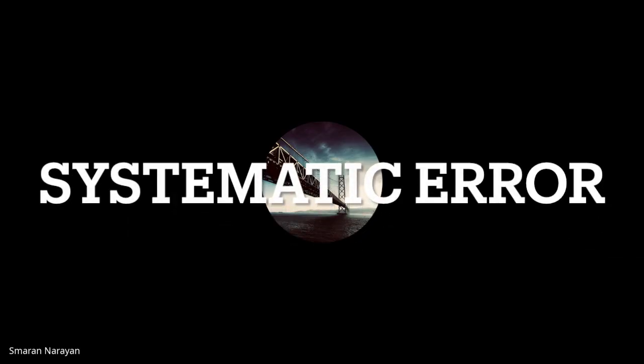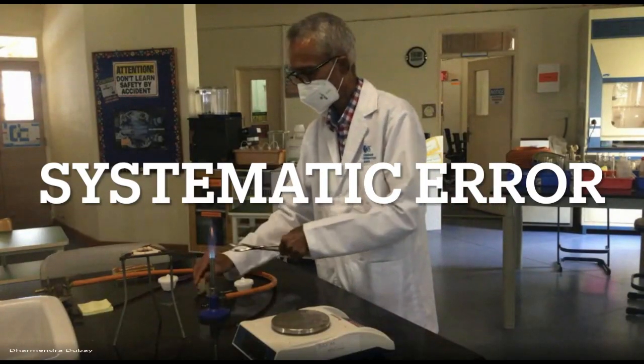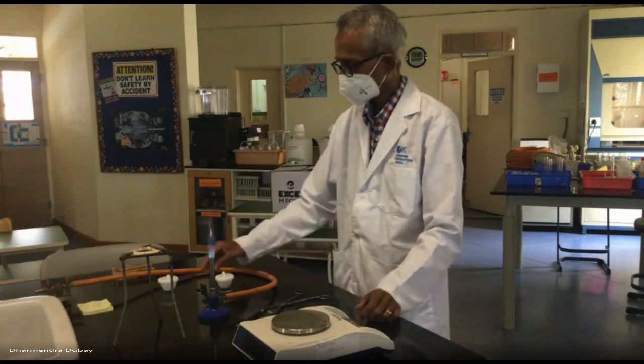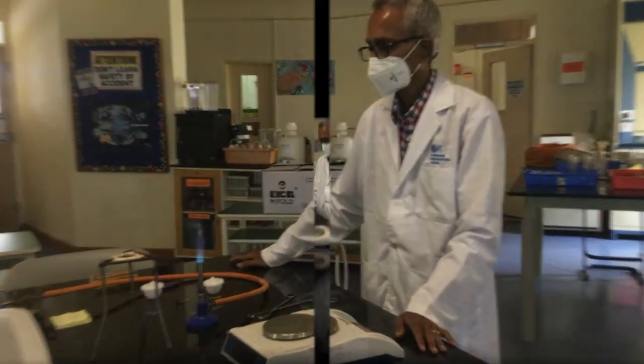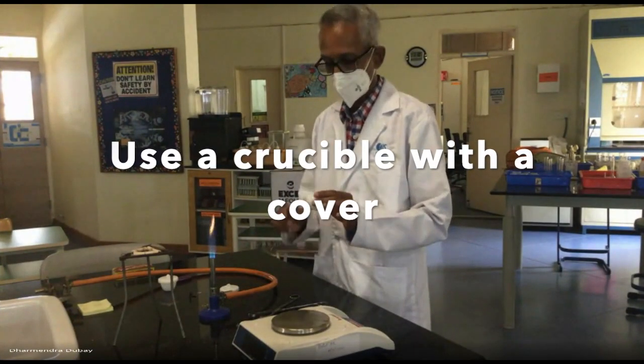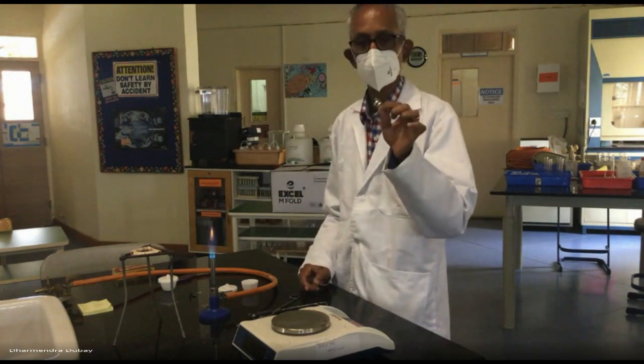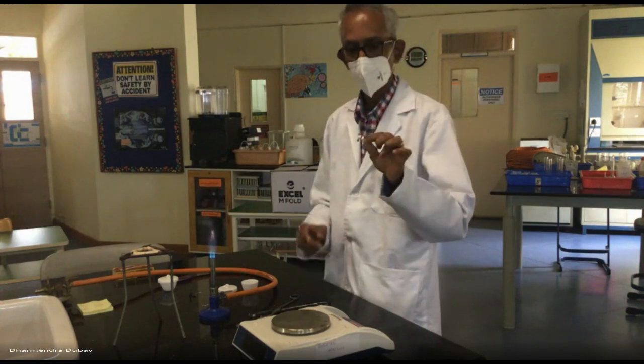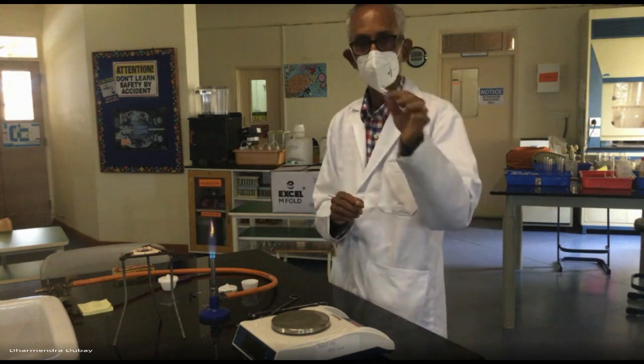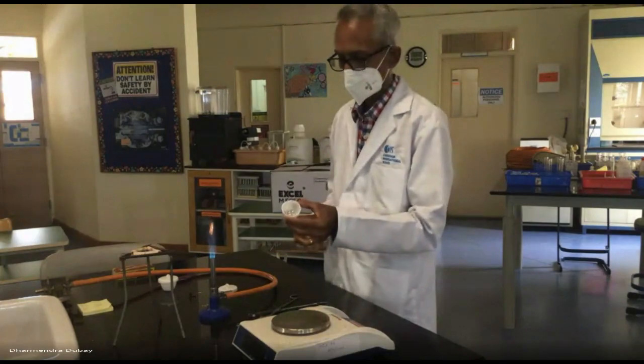Systematic error. We are going to be consistently losing mass from what we should have. Some mass is going to stay on the tongs, some of it is going to go into the air. So, there's got to be a better way. We will be burning the ribbon in a crucible. This ribbon I've taken is about 15cm in length. And I've laid it and also I've coiled it. See that this sits well inside the crucible.